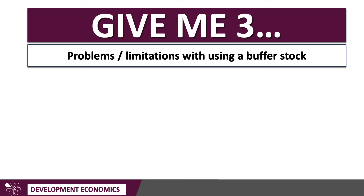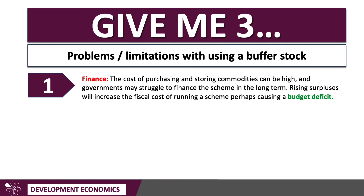The first big problem is finance. Running a Buffer Stock can be pretty expensive. In theory it should make money — buying when the price is low and selling when it's high — so Buffer Stocks should profit in theory. But the costs of purchasing and storing commodities can be high. Governments often struggle to finance the scheme, spending a lot of taxpayers' money purchasing commodities for storage, which can have a heavy fiscal cost and increase the government's budget deficit.